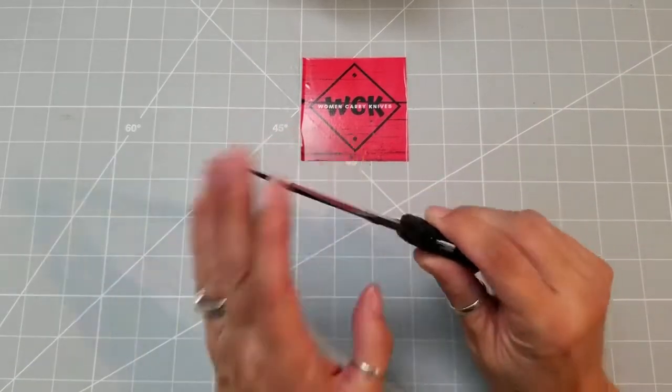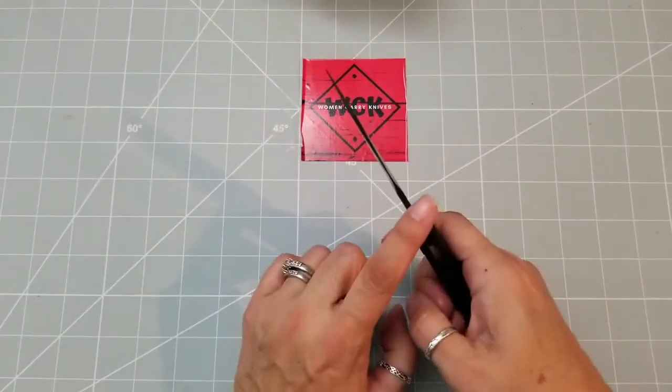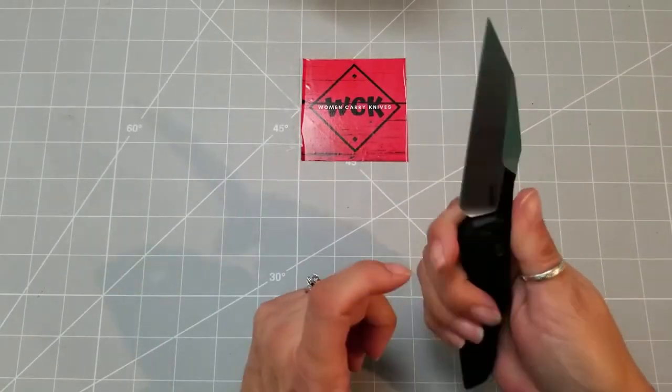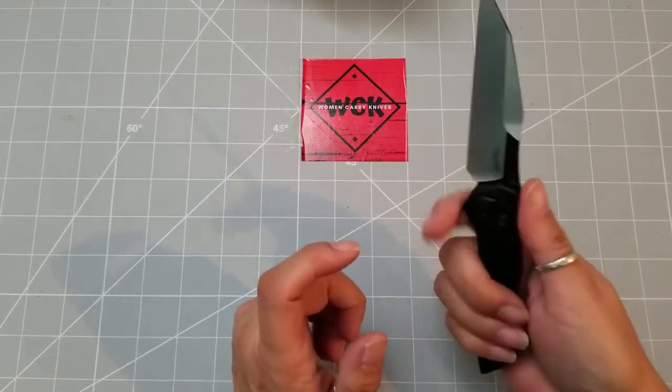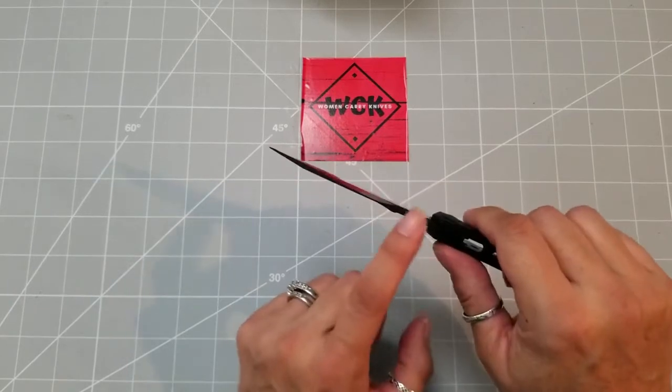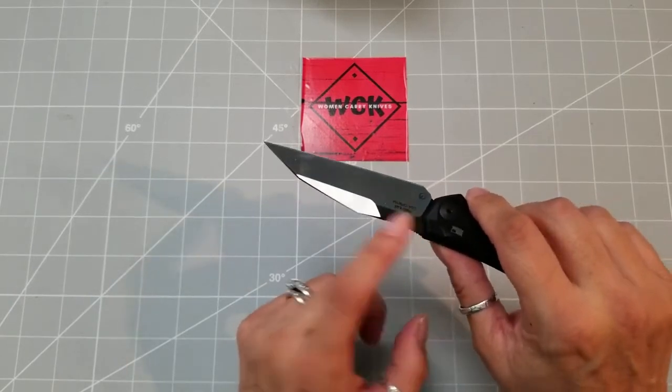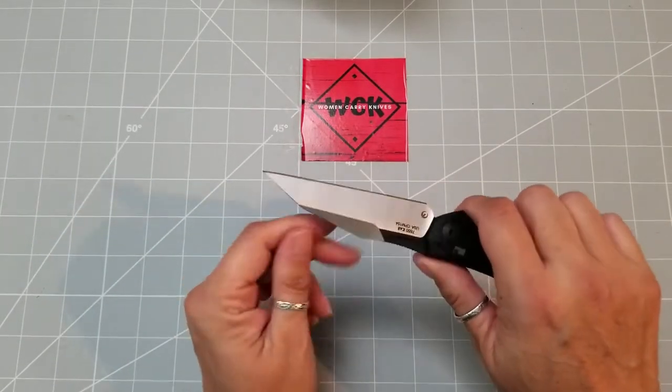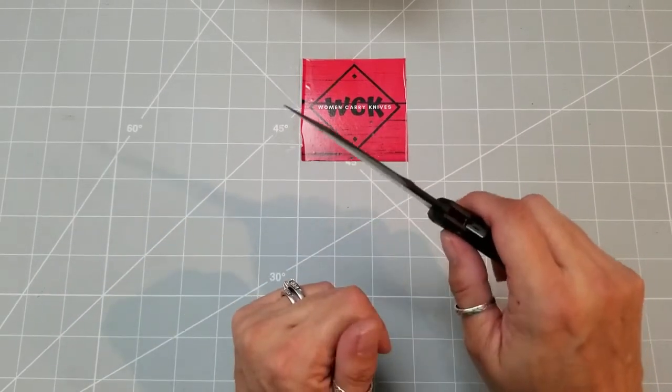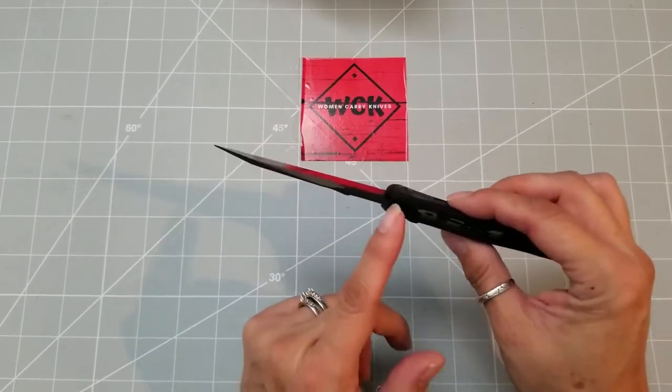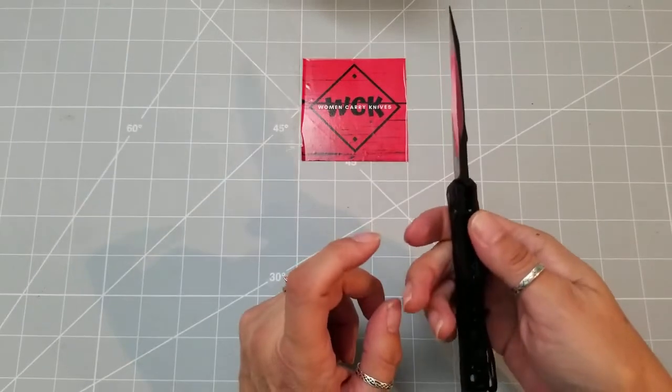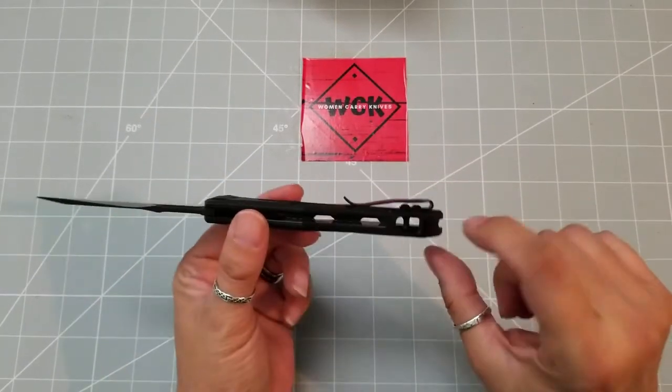With the jimping on here, you can really choke up on this knife. Now you don't have a choil area and I wouldn't stick my finger there because you definitely would slip and cut yourself, but you can choke up on this and I love that. I am a big fan of the jimping on the blades. I know a lot of people are not. I like it because I feel like my finger is not going to slip. Now also when I have nails, because sometimes I do, it allows me to be able to get a grip on there without having to worry about my nails either. And I do like that you do have a lanyard hole here.